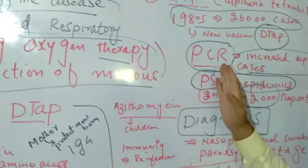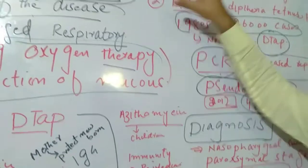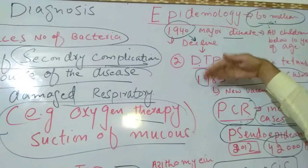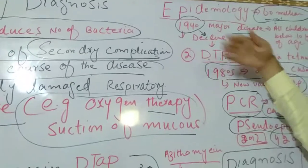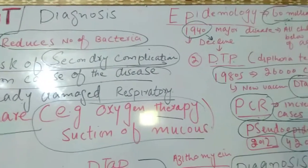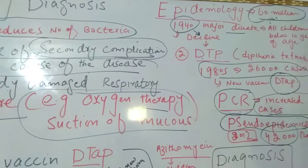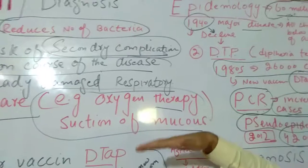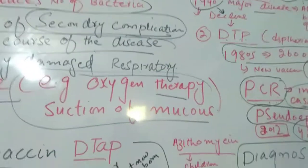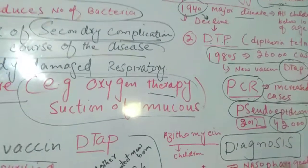In summary, the epidemiology of whooping cough changes according to the area. In developed countries like the US, cases have declined, but in developing countries cases remain high due to lack of immunization.